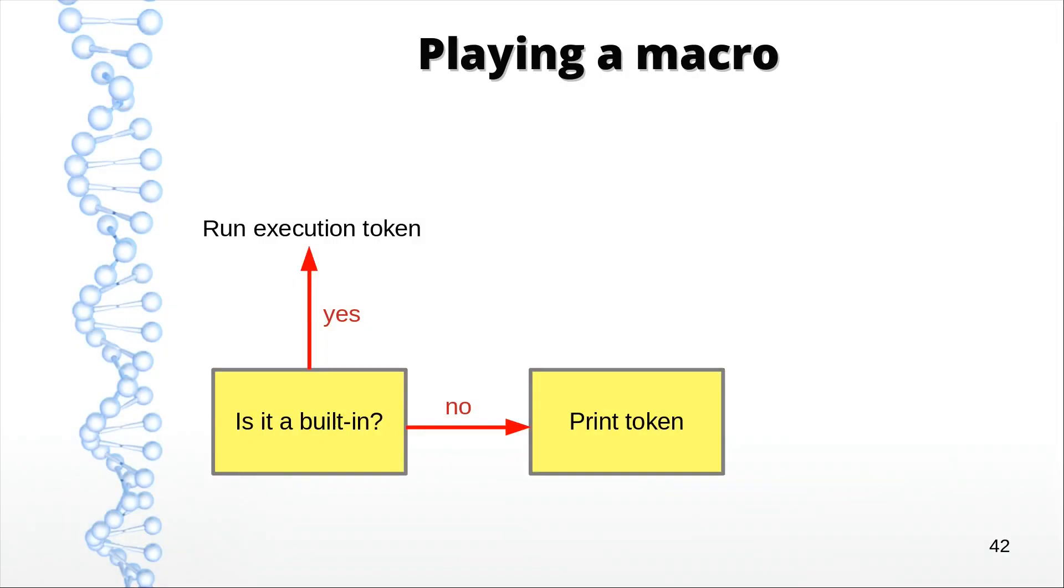Now, replaying the macro requires an additional check. In our previous iteration, all we had to do was to check whether the token matched the built-in keyword. If it did, we called the appropriate word. And if it didn't, we simply wrote the token to the output file.